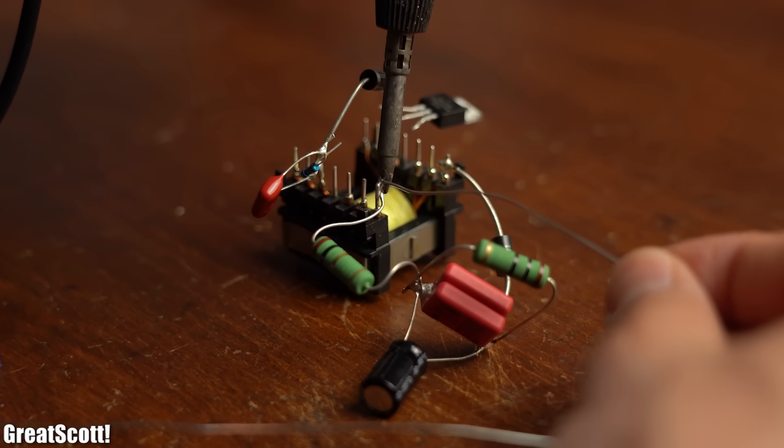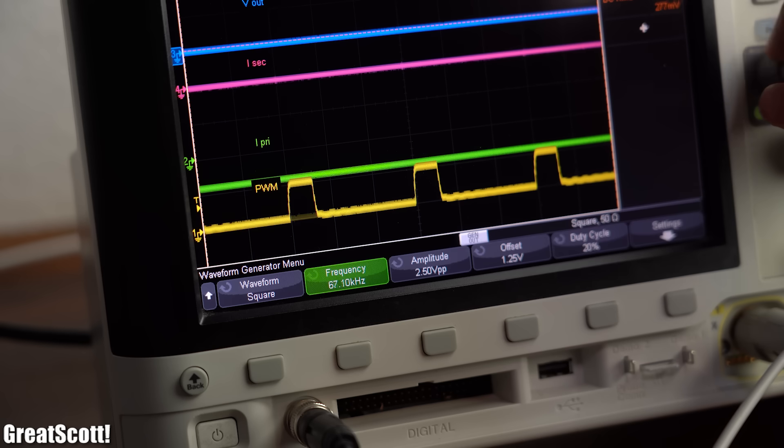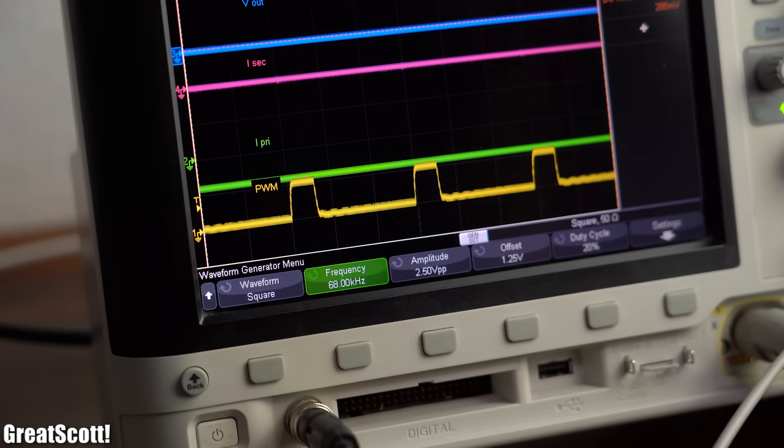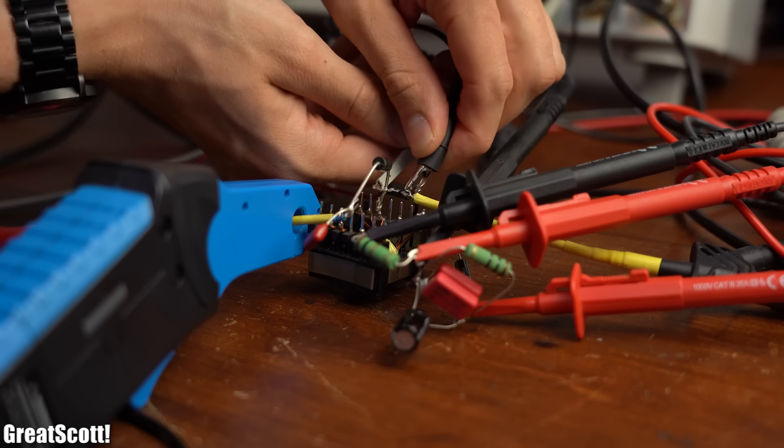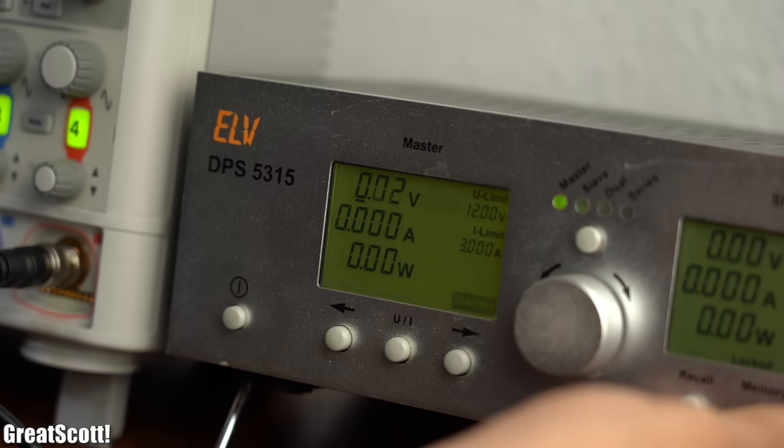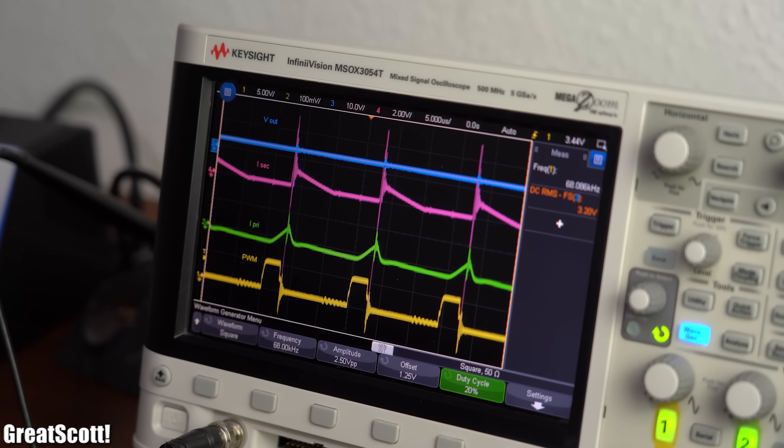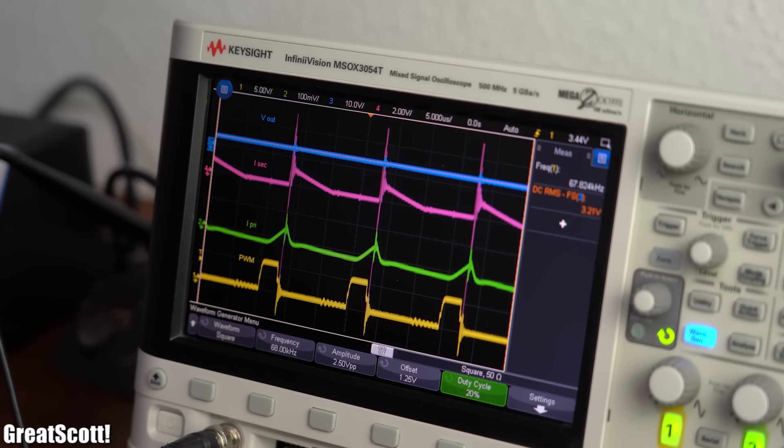But nevertheless, after building up the circuit and using my function generator to switch the MOSFET on and off with a frequency of 68 kHz, it was time to capture some voltage and current waveforms after powering everything with 12V. And as you can see on the oscilloscope, the waveforms pretty much correspond with the theory.